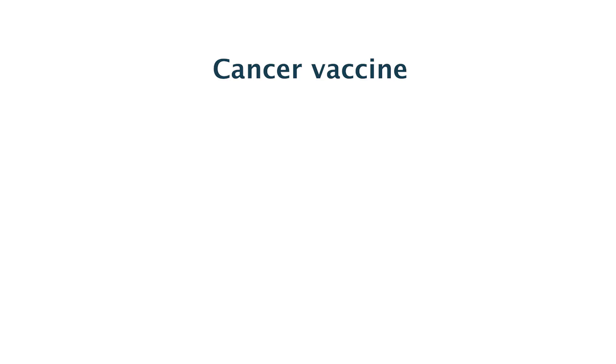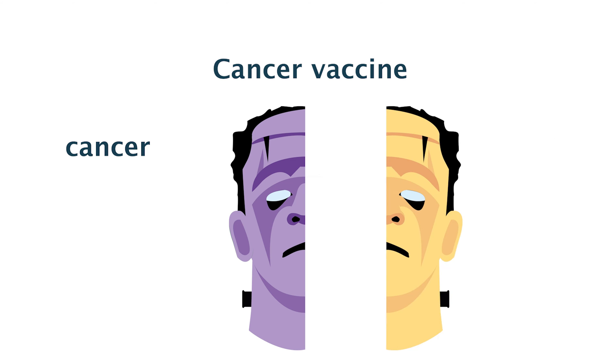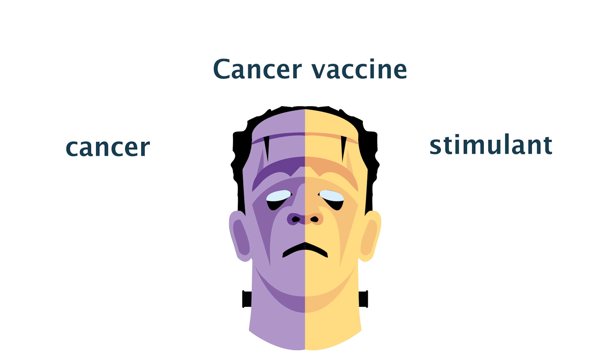Now we have a cell that's half cancer and half immune stimulator. Those cells can be injected in the body and will stimulate or drive T cell responses. That's an example of a vaccine.